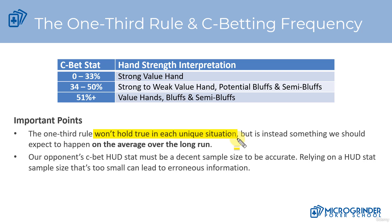Sometimes it's going to be less, sometimes it's going to be more, so this isn't going to hold true in each unique hand. But over the long run, on average, it will hold true. I actually did a separate Flopzilla analysis on this as well, to make sure that I was able to test it with a variety of different hands over a large sample size.